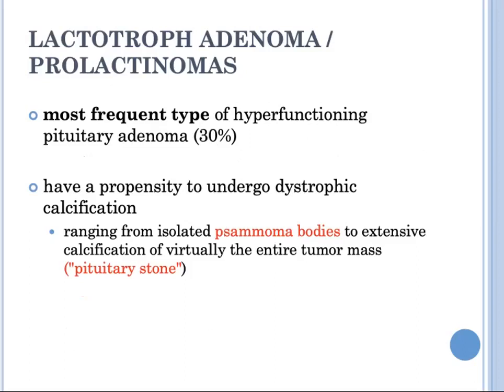Endocrine abnormalities depend on the type of hormone secreted by the pituitary adenoma. The most frequent type of hyperfunctioning pituitary adenoma is the prolactin-secreting lactotrope adenoma, or prolactinoma, accounting for 30% of clinically recognized cases. These lesions range from small microadenomas to large expansile tumors with symptomatic mass effects. Lactotrope adenomas often undergo dystrophic calcification, ranging from isolated psammoma bodies to extensive calcification — what we call the pituitary stone.